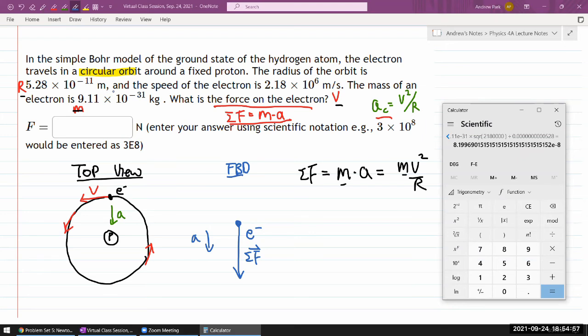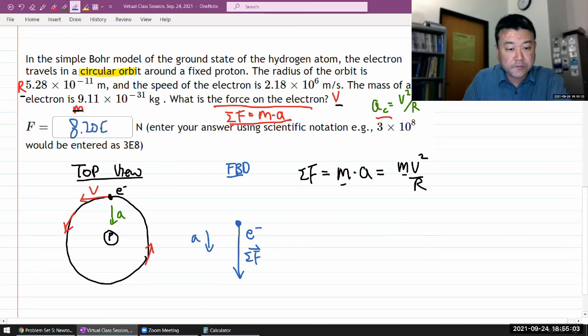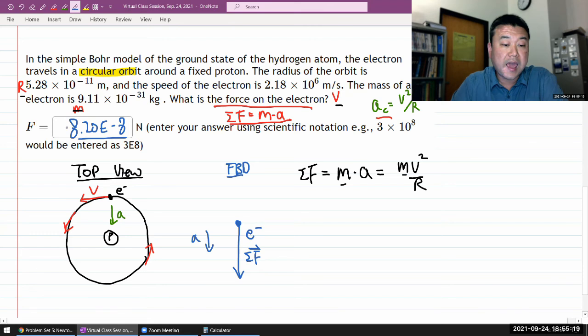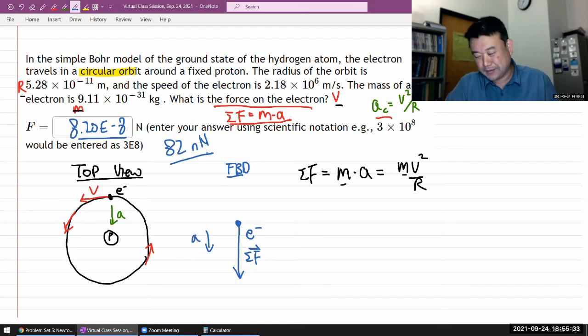So, 8.20 times 10 to the power of minus 8. Yeah, it's a very small number. It's, you know, 10 to the minus 6 is micro. So I guess I can use the word nano. So 10 to the minus 9 is nano something. So this is 82 nanonewton. 82, lowercase n, uppercase N. How small is a nanonewton? I don't think I have a point of reference.